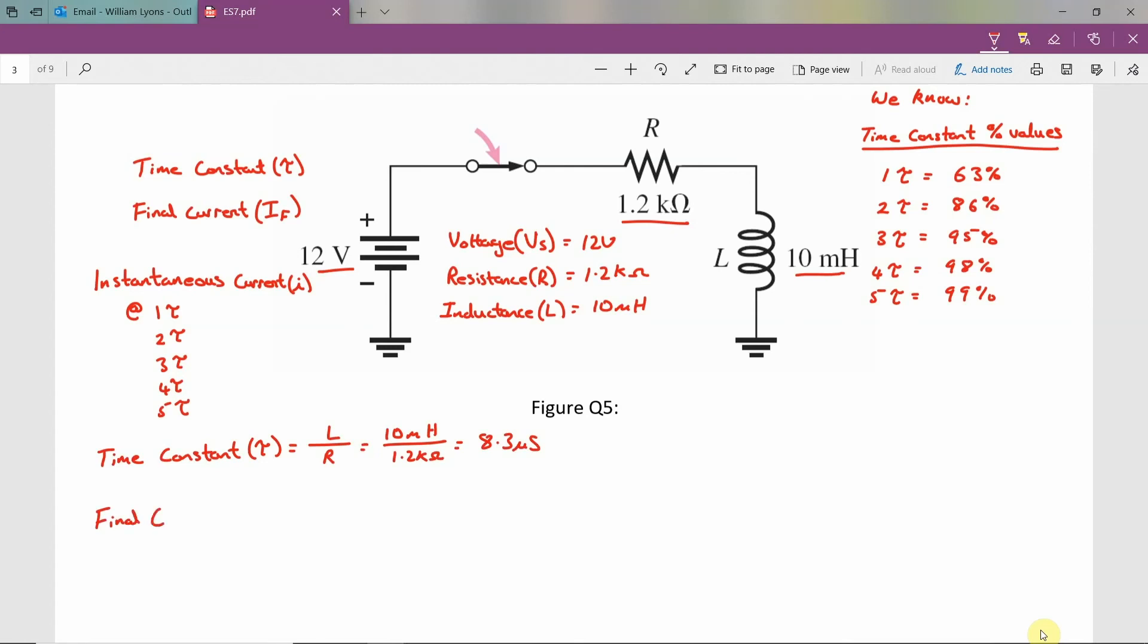We can calculate the final current IF using Ohm's law, which is voltage divided by resistance. So we can take the voltage source divided by the resistance in the circuit, that gives us 12 volts divided by 1.2 kilo ohms, which when you carry out the calculation results in a final current of 10 milliamps. This value represents 100% value for your final current.